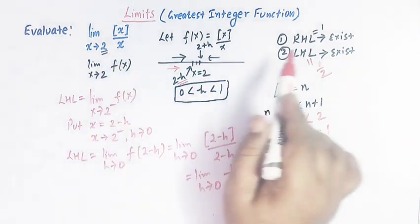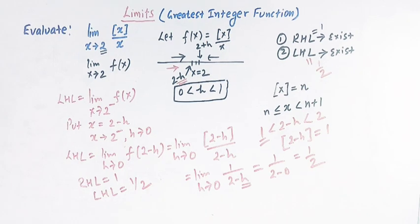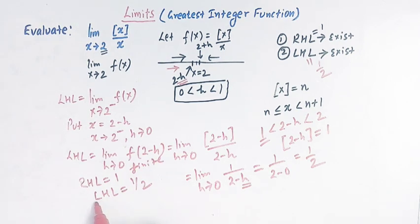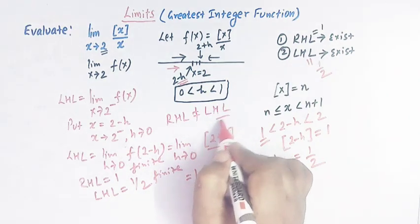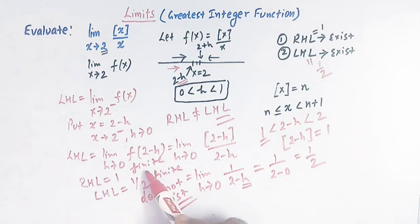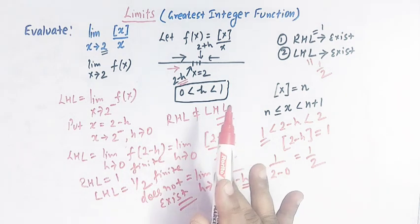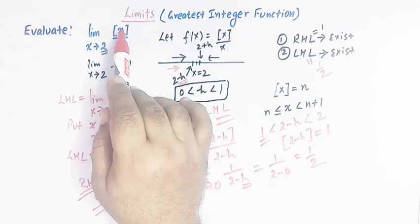So viewers, we have seen that the right-hand limit is 1 and the left-hand limit is one-half. Although both limits exist and are finite, they are not equal. For the existence of a limit, the right-hand limit should exist and be finite, the left-hand limit should also exist and be finite, and they must be equal. Since the right-hand limit is not equal to the left-hand limit, we conclude that the limit of this function as x tends to 2 does not exist.